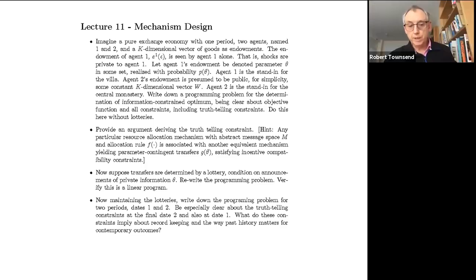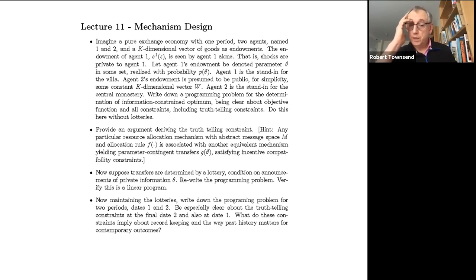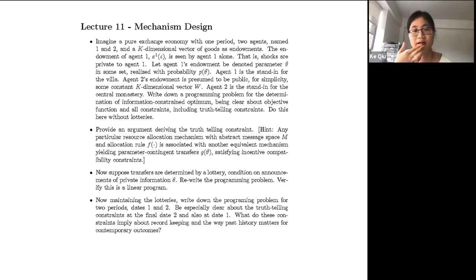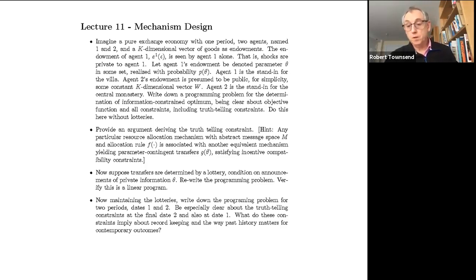What is the date-one constraint assuming about date two? Working backwards: at date two we get the truth-telling constraint, so utility is greater for telling the truth than announcing something counterfactual. That is now imposed as part of the solution as a constraint. Working back to date one, it assumes truth-telling at date two, so we only have to worry about whether to be truthful at date one or lie at date one — because whatever they do at date one, they will tell the truth at date two.